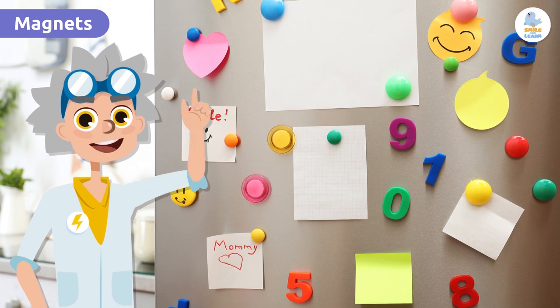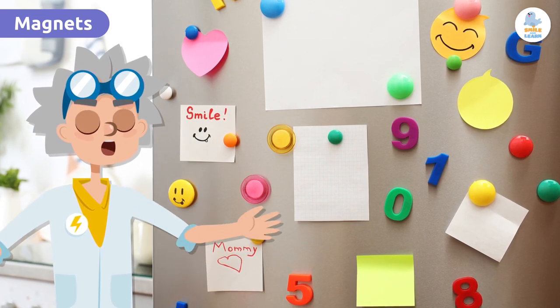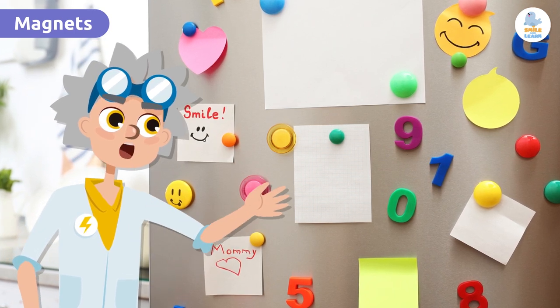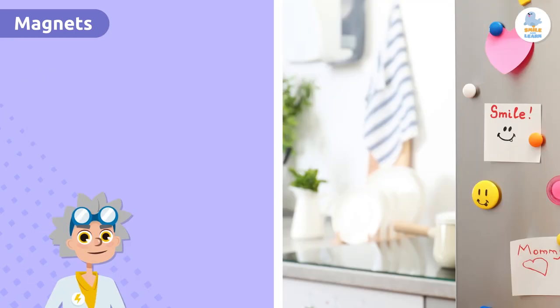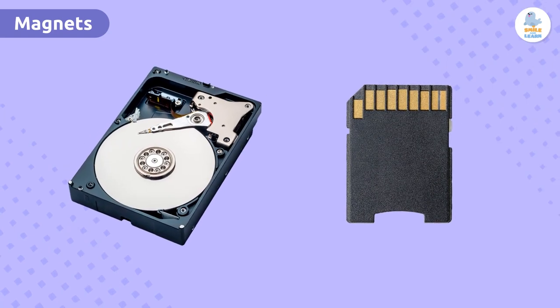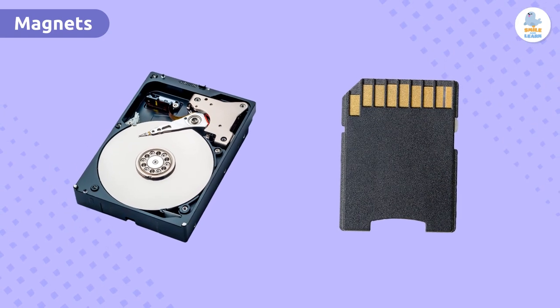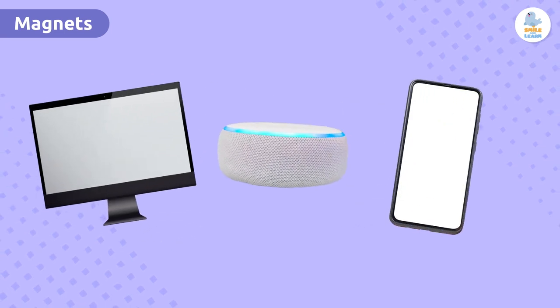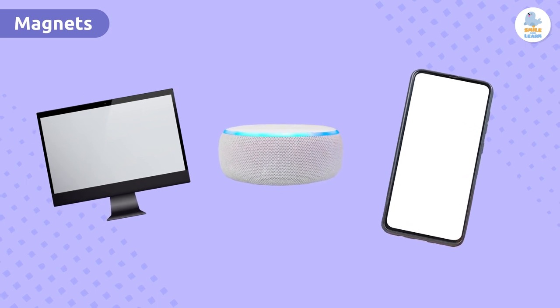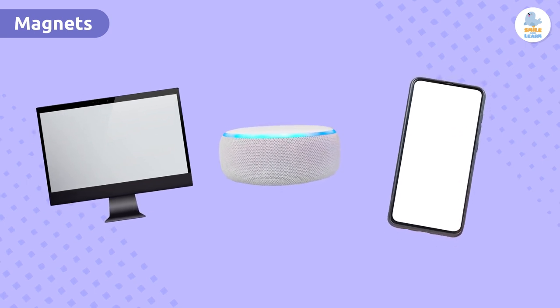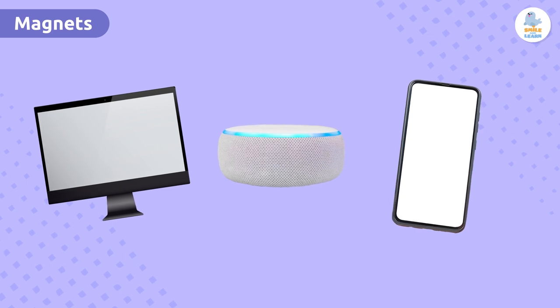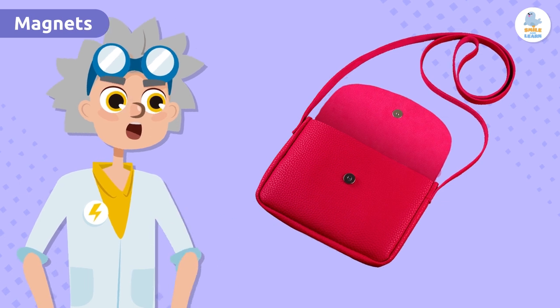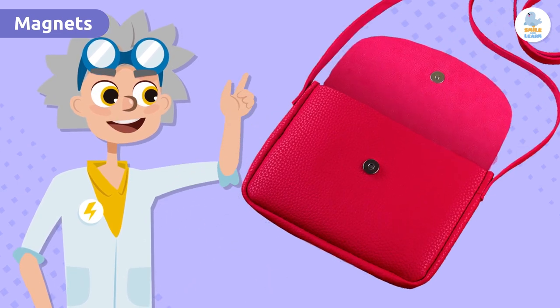But magnets aren't just used to hang the shopping list on the fridge—they can be used for many other things. Let's take a look at some examples. Digital storage devices such as hard disks and memory cards use magnetic properties to store data. Screens, speakers, and other electronic devices also have magnets inside them. They're everywhere! I'm sure you've probably seen magnets on the clasps of bags and purses before, right? Look closely.